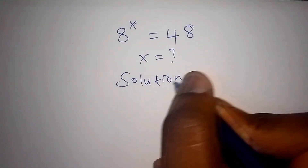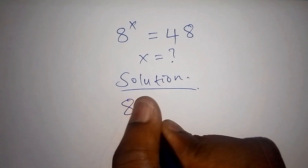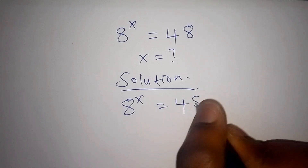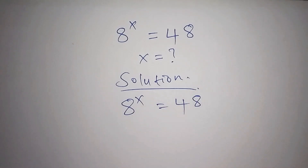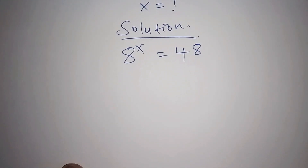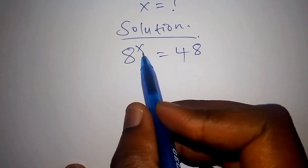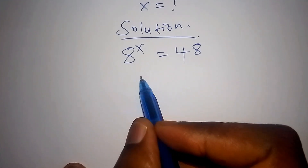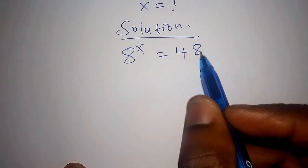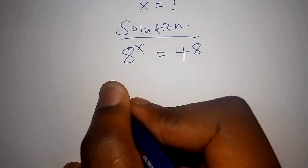So this is the solution. Under the solution, we have the problem 8 to the power of x is equal to 48. Remember that 8 is the base and x is the index. It is impossible for us to express 48 also into a base and an index, so we are forced to use the log.